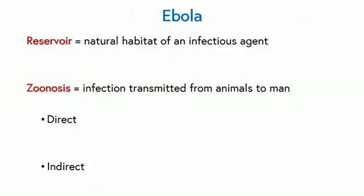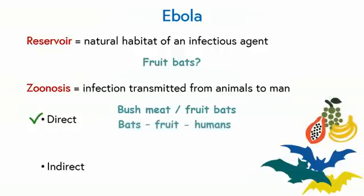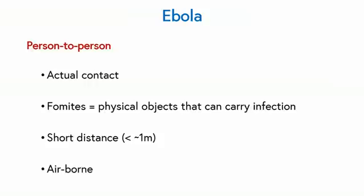So what about Ebola? The reservoir for Ebola is not man — it's thought probably to be fruit bats, which are their natural habitat. Fruit bats seem to be able to carry the infection without getting ill, making it a zoonosis. It can be transmitted from the bats by eating them, or because the bats infect other animals and humans eat those infected animals or come into contact with them. It's also probably possible to transmit from fruit that bats have half eaten, via fomites from their saliva. Ebola can also transmit person to person after that initial infection from bats or bushmeat, occurring through direct contact and body fluids, fomites, and probably also over short distances. Importantly, Ebola is not airborne.